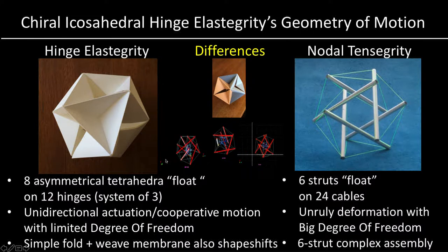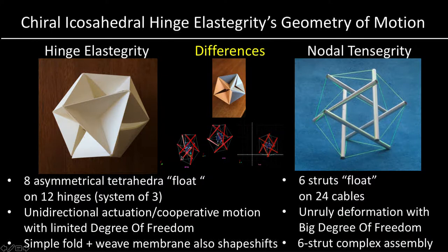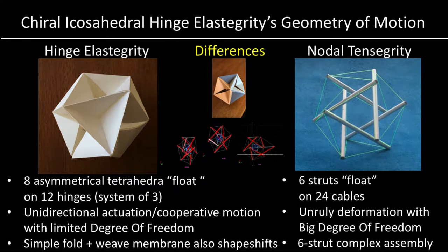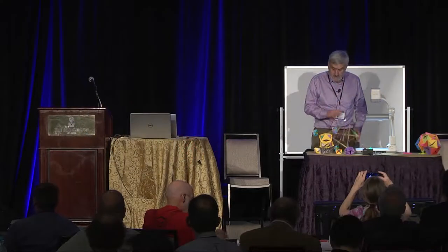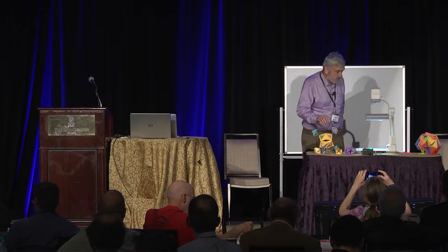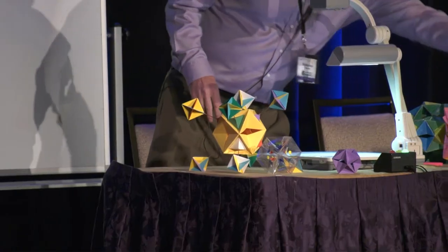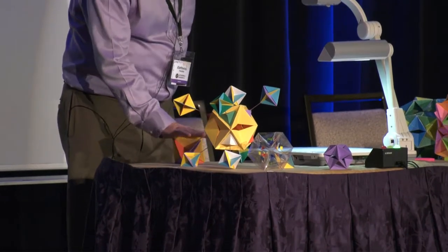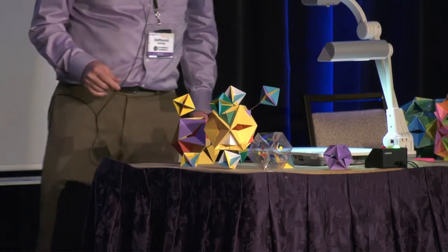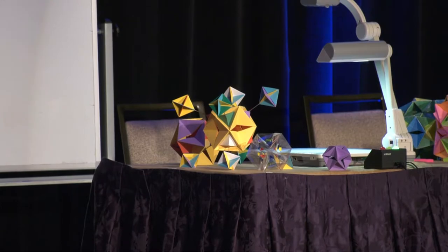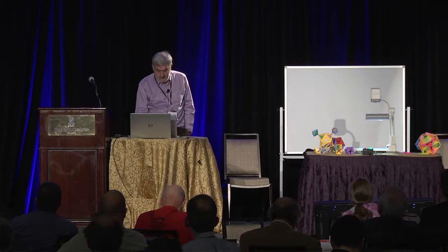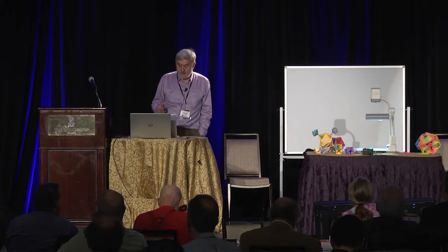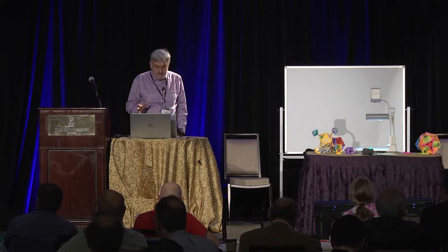The way they deform is a very important difference. You can see here the 6 struts — a version of it — which you can flatten and it goes up, but it goes in different directions versus the more orderly version. This one: you press straight down and it goes along a predictable trajectory. And most important is the ease of assembly.